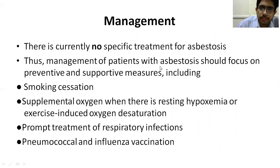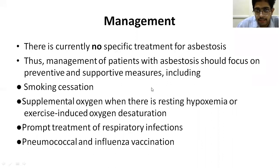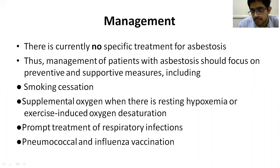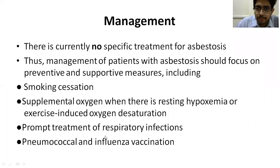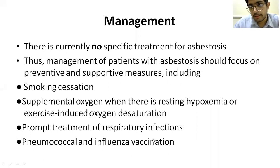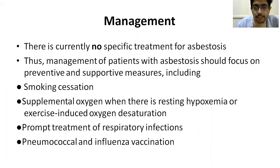There is no specific management for asbestosis — only supportive measures. If the patient has parenchymal fibrosis, ask them to quit smoking as it further deteriorates the situation. If there is respiratory failure, give supplemental oxygen. These patients are prone to respiratory infections, so give appropriate antibiotic therapy and pneumococcal and influenza vaccination.